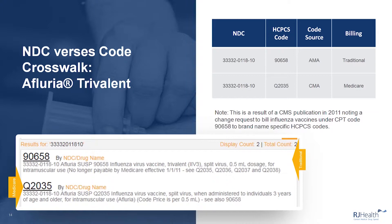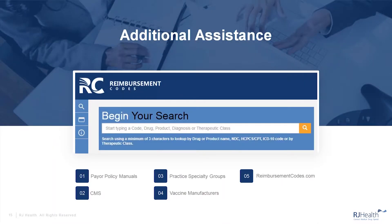So how do I ensure that I use the correct billing code? Well, there are several references to check, including payer policies and manuals, the CMS website which includes annual vaccine reimbursement rates. You can also obtain specific billing guidelines from your practice specialty groups, such as the ACP — American College of Physicians, AAP — American Academy of Pediatrics, AAFP — the American Academy of Family Physicians. Manufacturers may also provide guidance on their drugs.